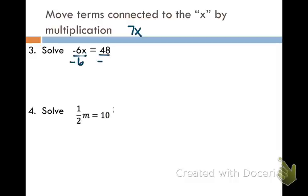So I'm going to divide both sides by negative six. Remember, what you do to one side, you have to do to the other side. On the left side, negative six divided by negative six cancels out. I'm just left with the x. And on the right side, I get negative eight. So there's my answer.